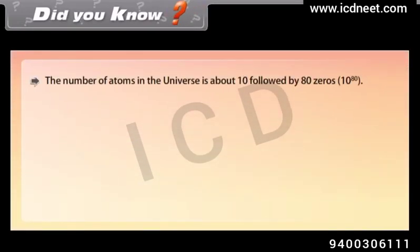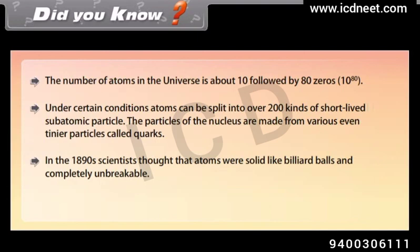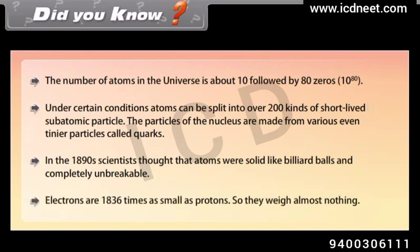Did you know? The number of atoms in the universe is about 10 followed by 80 zeros. Under certain conditions, atoms can be split into over 200 kinds of short-lived subatomic particles. The particles of the nucleus are made from even tinier particles called quarks. In the 1890s, scientists thought that atoms were solid like billiard balls and completely unbreakable. Electrons are 1836 times as small as protons, so they weigh almost nothing.